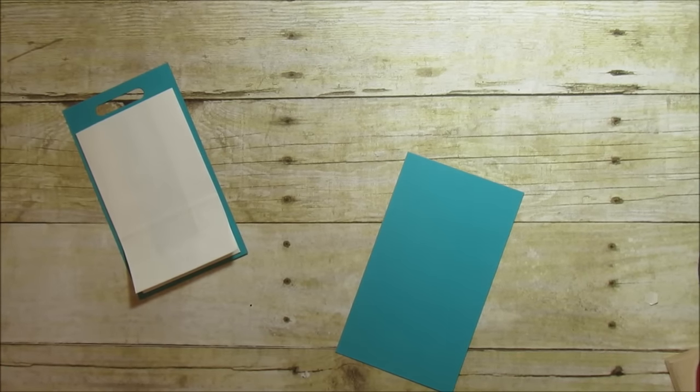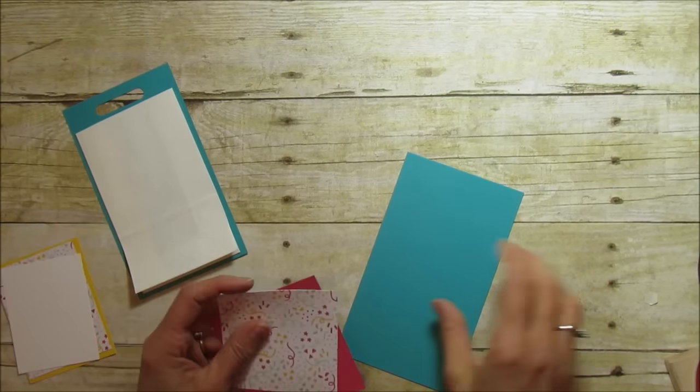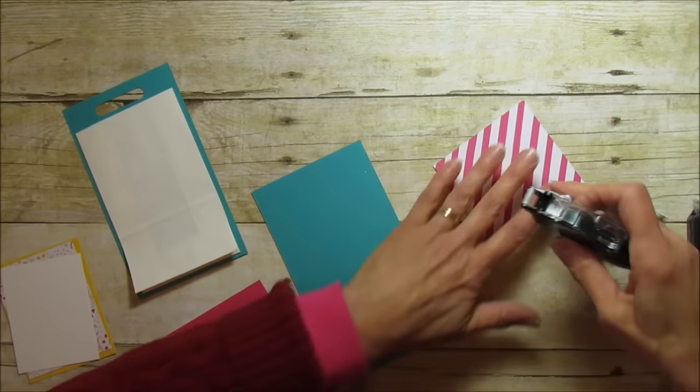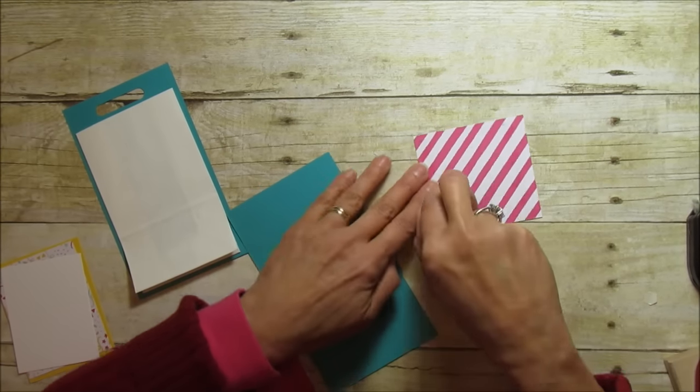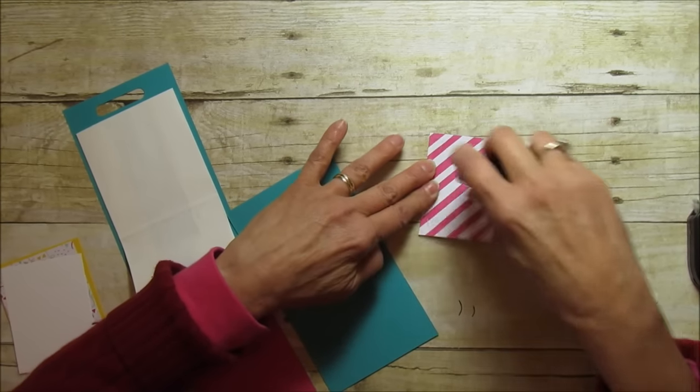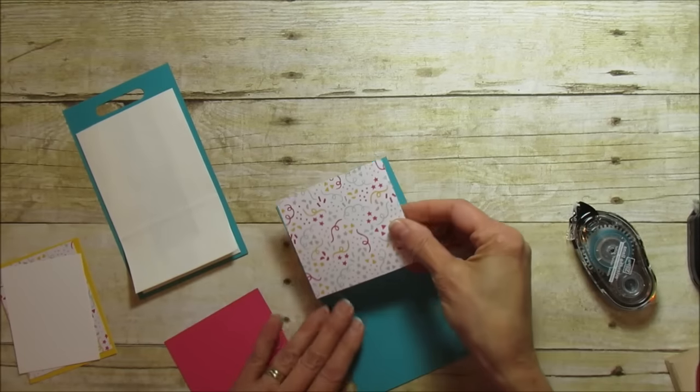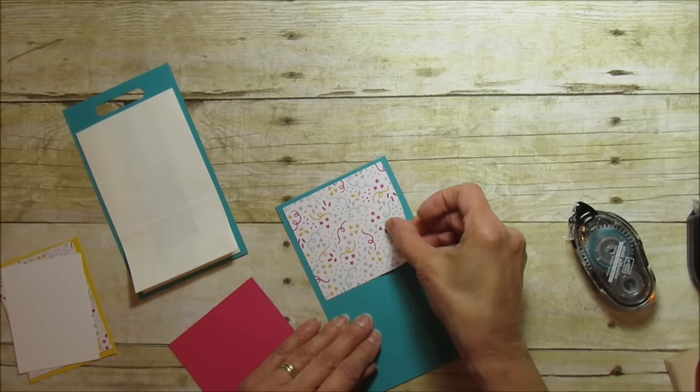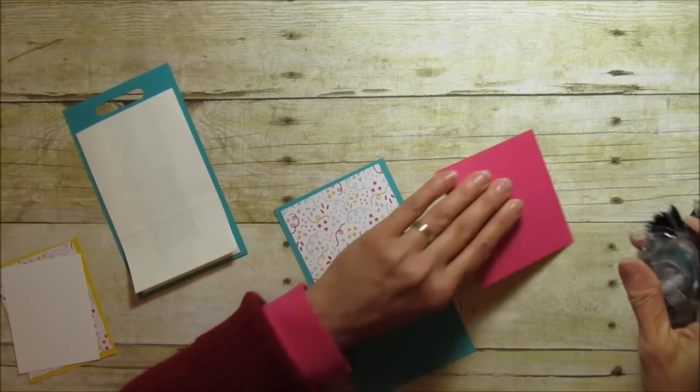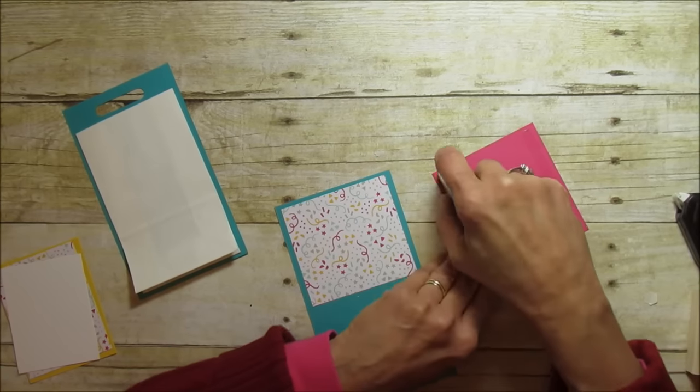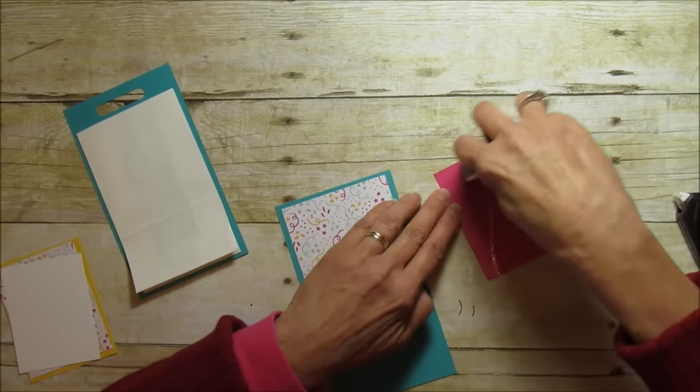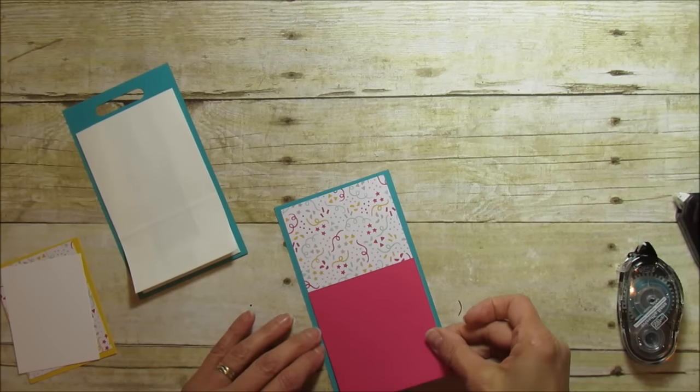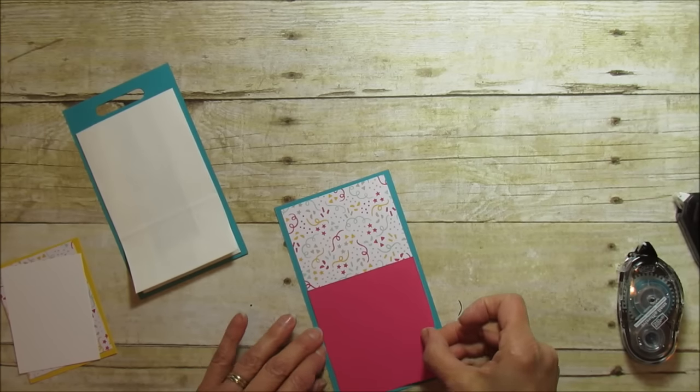Then we're going to decorate the front of this so let's go ahead and mat first. This piece of designer I'm going to use the snail for this. The It's My Party designer series paper, this is a great stack and we're going to mat that first. Then I'm going to mat this bottom piece, just line them up and it's going to overlap a little bit but I did that on purpose.